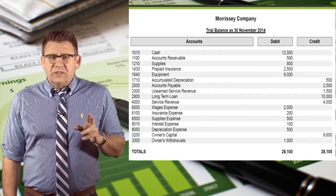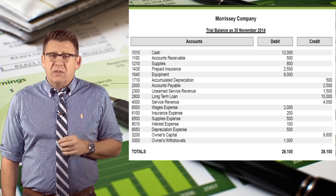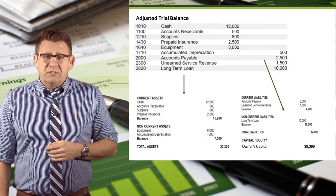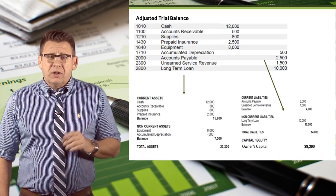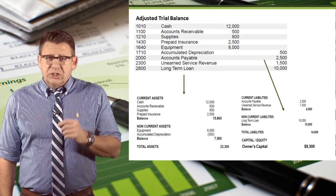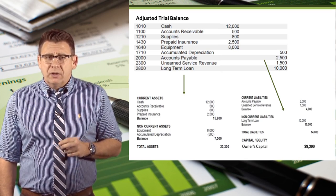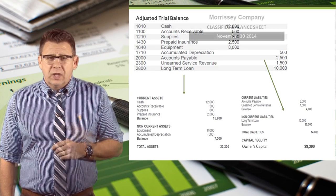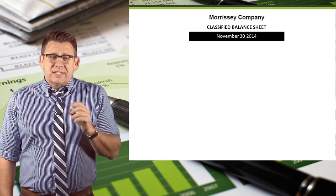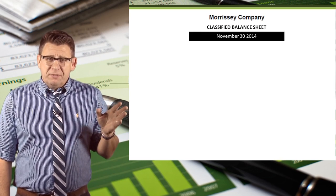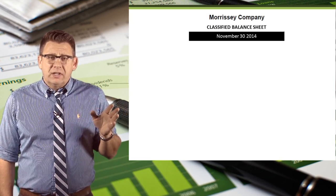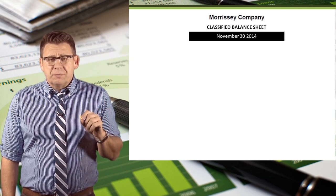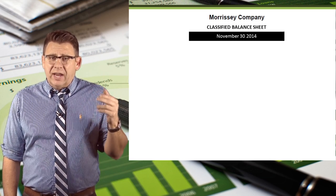So let's use the adjusted trial balance and prepare the classified balance sheet. We take the assets and liabilities from the trial balance and put those on the balance sheet. Additionally, we will use the ending owner's capital balance from the statement of owner's equity. The balance sheet has a company name, the name of the financial statement, and the date — either just the date, or sometimes 'as of' and then the date.